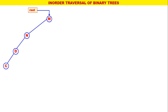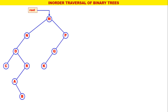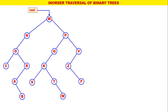Now let us consider one more tree — a little big binary tree. M is the root of this tree. The left child of M is N and the right child of M is P. Therefore the inorder for M is NMP with M processed.